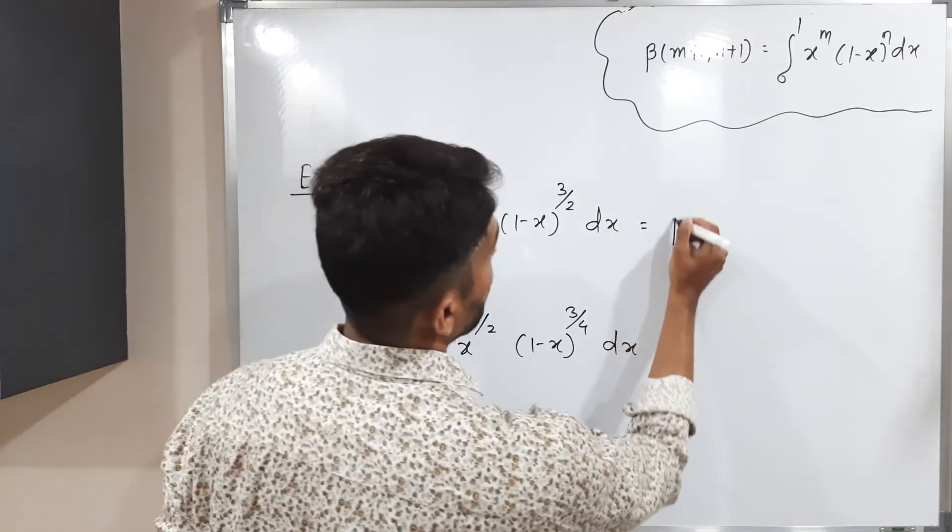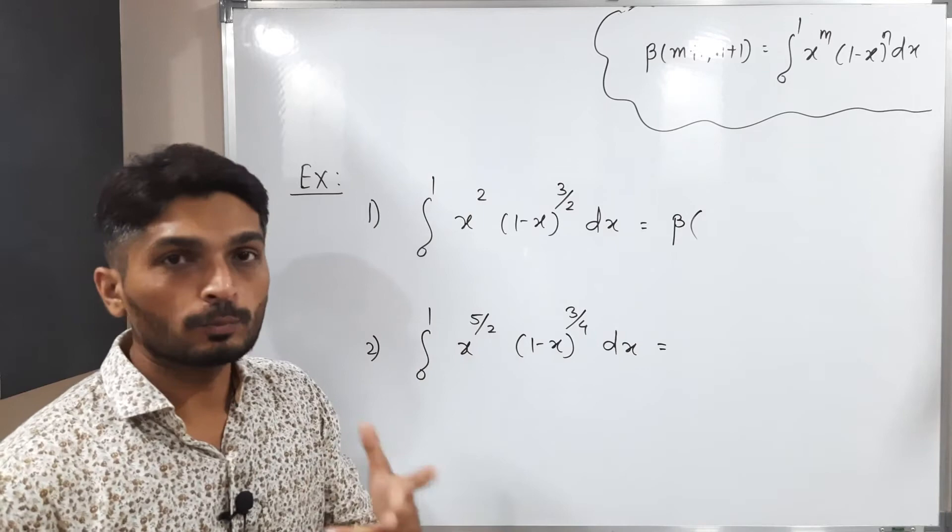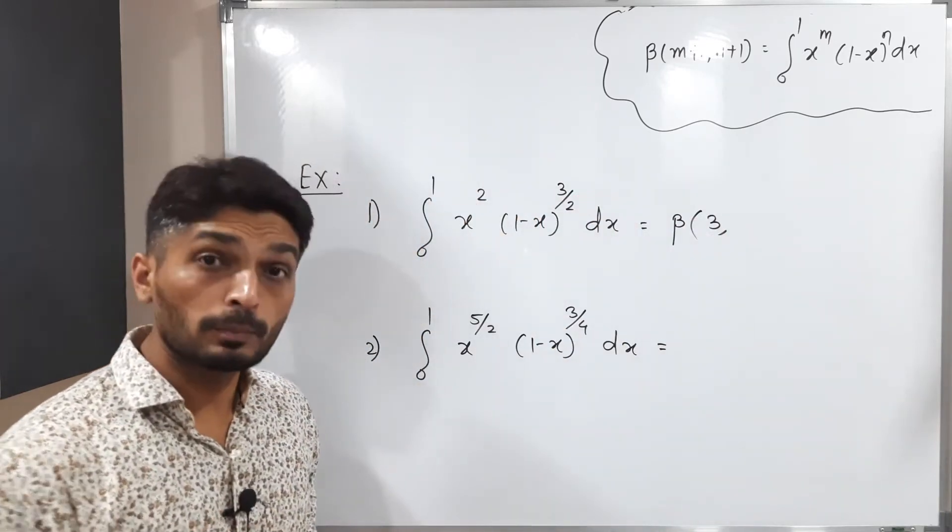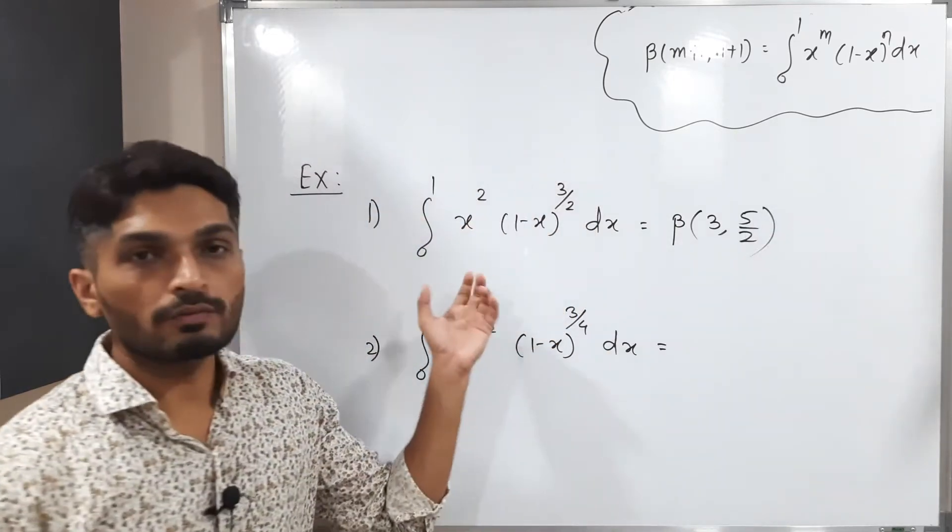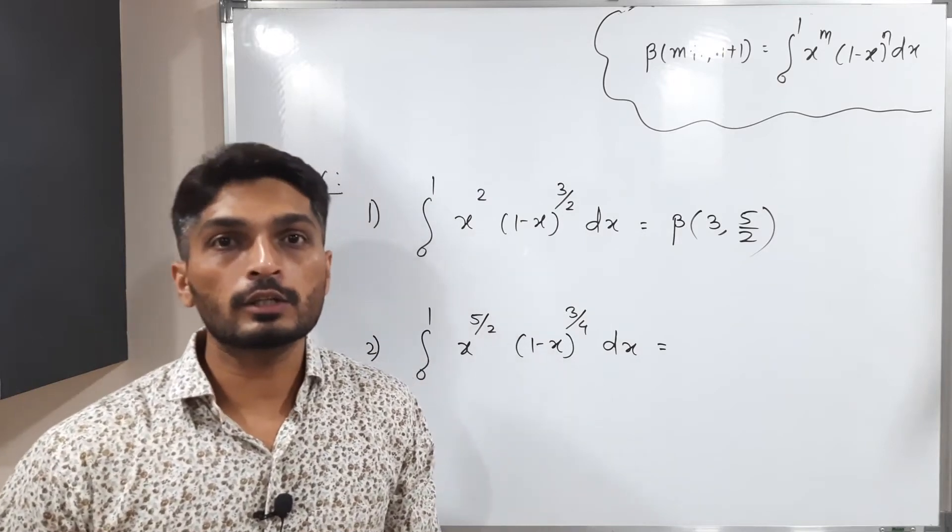Beta of - we need to add 1 here - 2 plus 1 equals 3, and here also add 1: 3/2 plus 1 equals 5/2. In this way we express the given integral in the form of beta function. For the second integral we do the same thing.